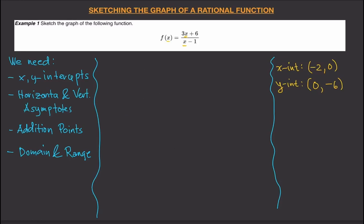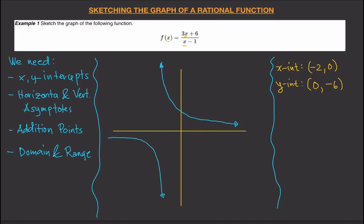Now let's move on to asymptotes. A vertical asymptote is a vertical line that separates or cuts your graph, and a horizontal asymptote is a horizontal line. It's worth noting that your graph will never touch your asymptote — it will get closer and closer but will never cross it.